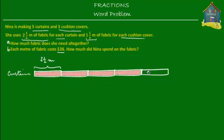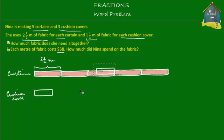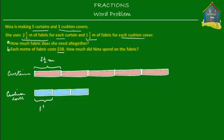We have these red or pinkish colored curtains. Then we have three cushion covers — Nina also made three cushion covers, and for each cushion cover she used one and a third meters of fabric. Since one and one third is smaller than two and a half, I'm going to make it slightly smaller. So this is Nina's cushion cover — one unit — but we know she made three units. Let's drop some blue color here. Each of the blue units is one and a third meters.